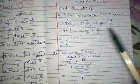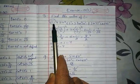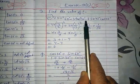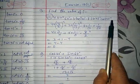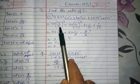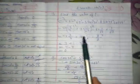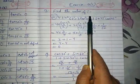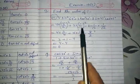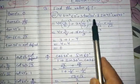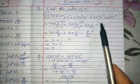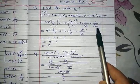Let us discuss some important questions. Question number 3: find the value of 4sin²60 + 3tan²30 − 8sin45·cos45. Now: sin 60 = √3/2, so 4·(√3/2)². tan 30 = 1/√3, so 3·(1/√3)². sin 45 = 1/√2 and cos 45 = 1/√2, so minus 8·(1/√2)·(1/√2).